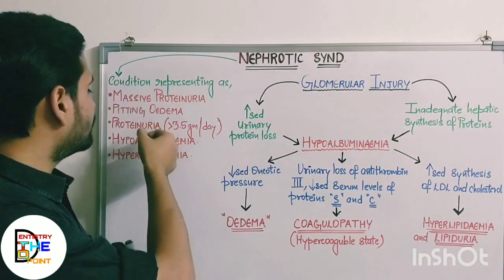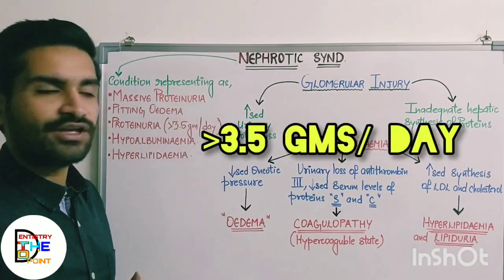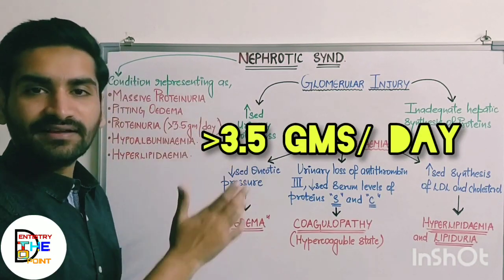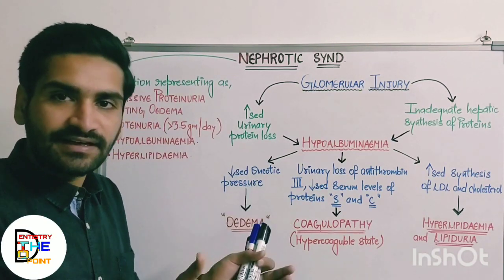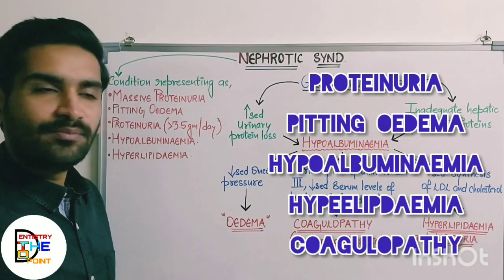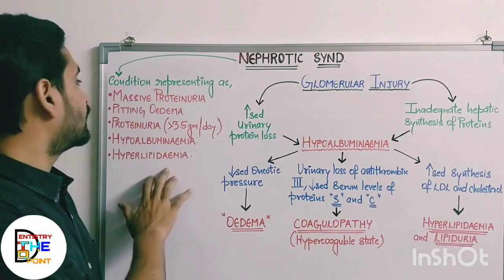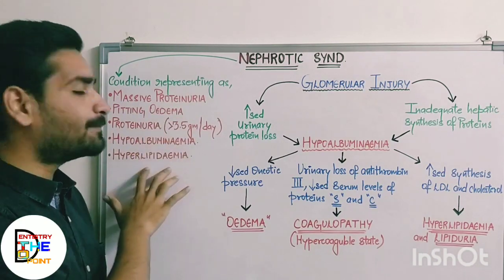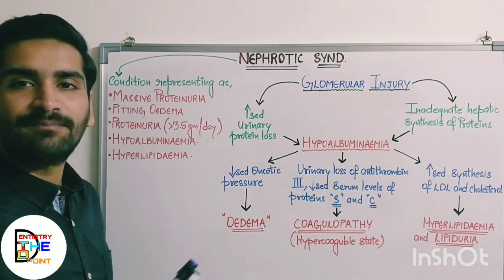The third point is massive proteinuria, that is more than 3.5 grams per day — that is the nephrotic range. Third is hypoalbuminemia. Fourth is hyperlipidemia — that is, increased formation of lipoproteins and cholesterol in the body. So the five features are: proteinuria, pitting edema, hypoalbuminemia, and hyperlipidemia.